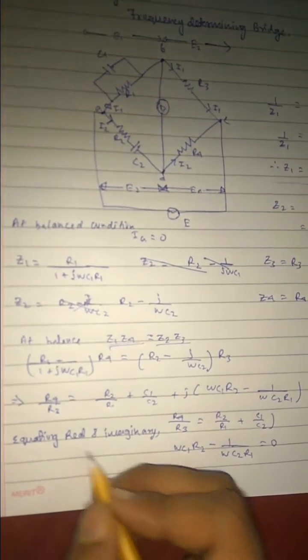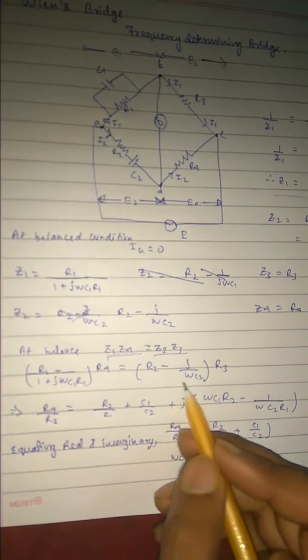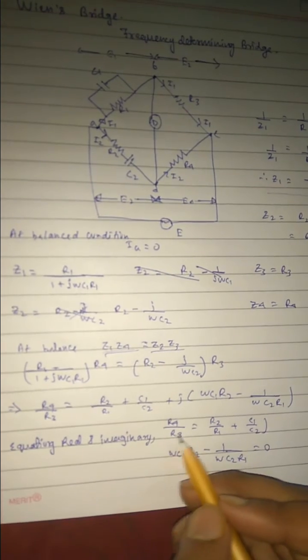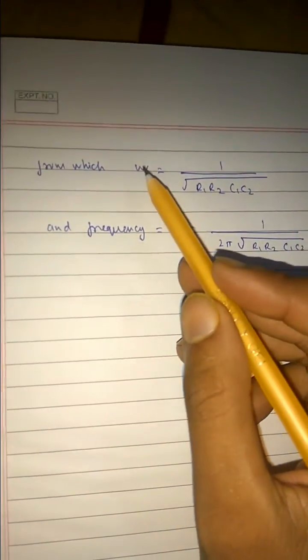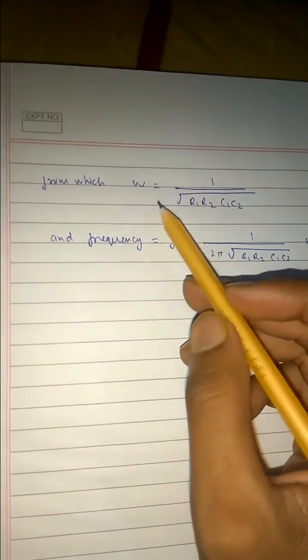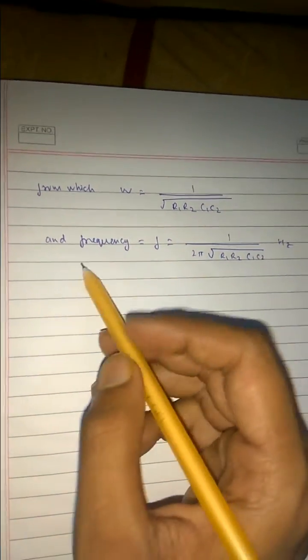Now when we equate the real and the imaginary part, we get R4. This is the real part, this j is the imaginary part. So we separate them: this is the real part, this is the imaginary part. So from which we will be getting omega. The imaginary part, we will be getting this: 1 by R1·R2·C1·C2.